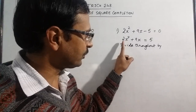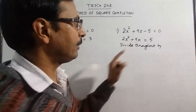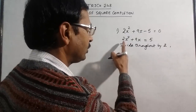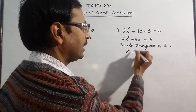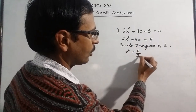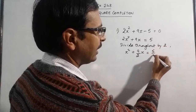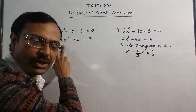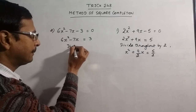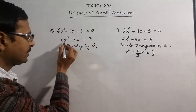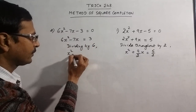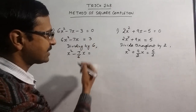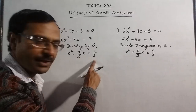The coefficient of x² in the first equation is 2, so we divide the entire equation by 2. The 2 vanishes, giving x². Since 9 cannot be divided evenly by 2, we get 9/2 x, and 5 also gives 5/2. For the second equation, the coefficient is 6, so we divide by 6. We get x² − 7/6 x, and 3/6 simplifies to 1/2. The results are written in lowest form.